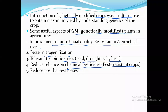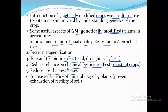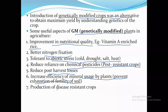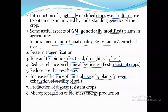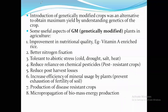We can also reduce post-harvest loss — after harvesting, there is a lot of crop loss, and we can stop it through genetic modification. We can increase the efficiency of mineral use by the plants, enhancing their nutritional absorbing capacity. Production of disease-resistant plants is also possible — you can make plants resistant to specific diseases, and the yield or productivity will increase. Finally, micro-propagation of biomass for energy production can also be increased. These are the aspects of how genetically modified crops have developed modern agriculture.